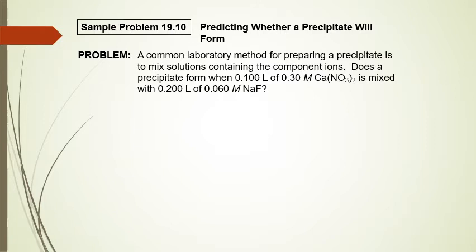Now let's look at an example where we only need to determine whether a precipitate will form — no equilibrium concentrations needed, just solve for Q. The first step is to find the total volume when the two samples are mixed. A common laboratory method for preparing a precipitate is to mix solutions containing the component ions.